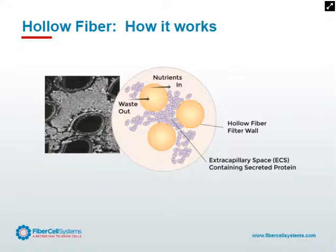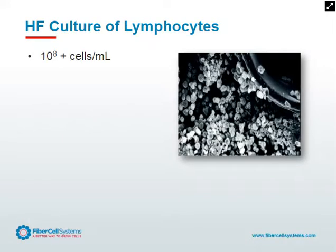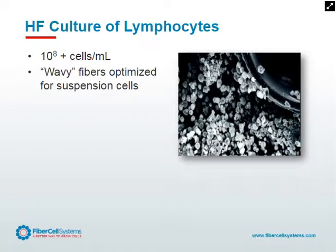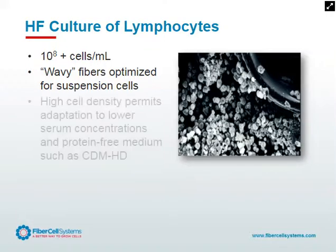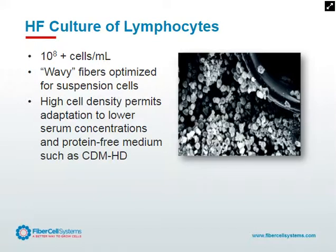So the three things that are fundamentally different — the high surface area to volume ratio, the fact that cells are bound to a porous support, and the ability to control the environment around the cells and concentrate their secreted products — represent a unique cell culture environment versus flask culture and other bioreactor methods. This high cell density at 10 to the 8 cells per milliliter is what permits adaptation to lower serum concentrations and to our protein-free media, CDMHD, which we've developed specifically for hollow fiber bioreactor culture.